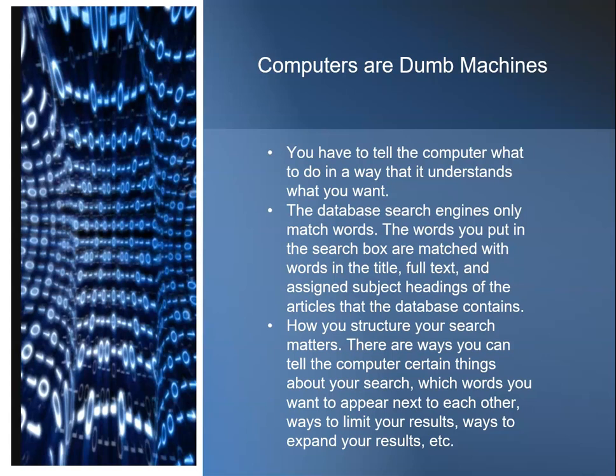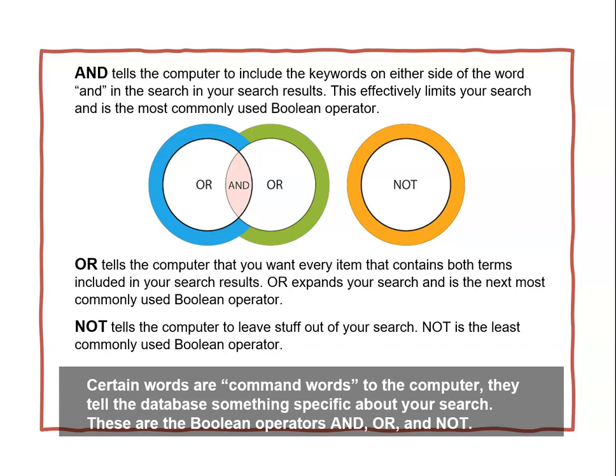You can connect your keywords with certain command words to create search strings for the library databases. This is called Boolean logic. Boolean logic means linking keywords with the command terms AND, OR, or NOT to get different results in your searching. Connecting your keywords with AND will retrieve only items that contain both keywords. Connecting your keywords with OR will retrieve items containing both terms whether they appear in the same item or not. Connecting your keywords with NOT will eliminate similar or confusing terms from your results list.